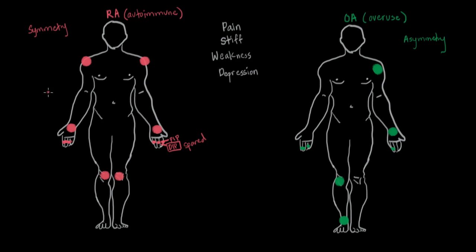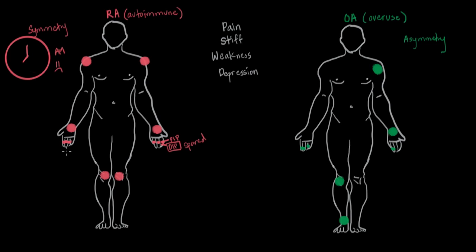Next, let's talk about time of day — when is RA going to be the worst? For autoimmune diseases, this is not caused by overuse of the joints. So patients with RA have symptoms worst in the morning, say around 8 a.m. As they get up and move around during the day, the stiffness gets better. As they use the joints more, symptoms actually lessen for rheumatoid arthritis. Since OA is from overuse, this feature is going to be the opposite.